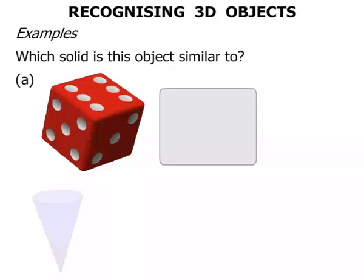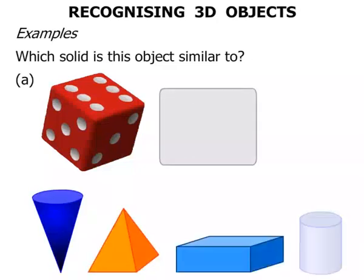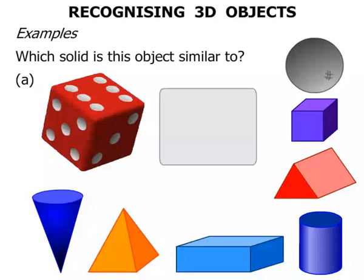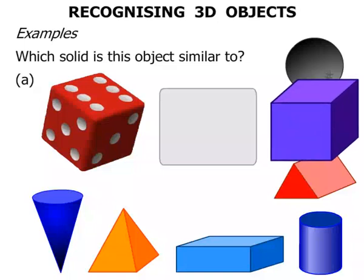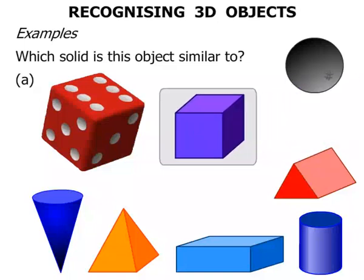We're going to put our answer there. We're going to choose from these solids. So looking at all those, which one looks like the die? Well, it's the cube. Let's put the cube across there. Terrific.